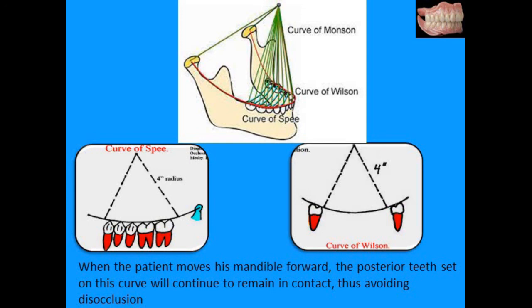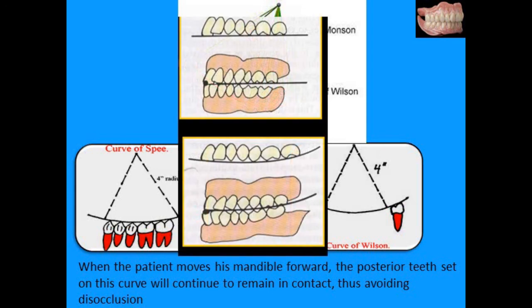All these curvatures help in balancing. For the curve of Spee, when the patient moves the mandible forward there is posterior tooth separation if the compensating curve is not included; when it is included there is posterior tooth contact and it avoids disclusion. Similarly, Monson's curve provides lateral balance, with no interference on lateral movements. Premolars are set according to Wilson's curve to avoid lateral interferences. The Pleasure curve, described by Dr. Max Pleasure, also improves denture stability and enhances balancing.